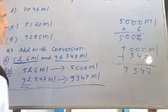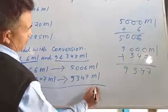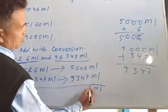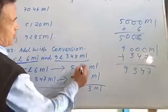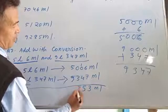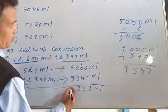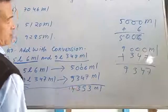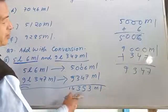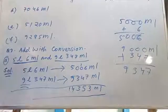Now add these two numbers: 5,006 and 9,347 ml. 6 plus 7 is 13, carry 1; 0 plus 4 plus 1 is 5; 0 plus 3 is 3; 5 plus 9 is 14. So the answer is 14,353 ml.